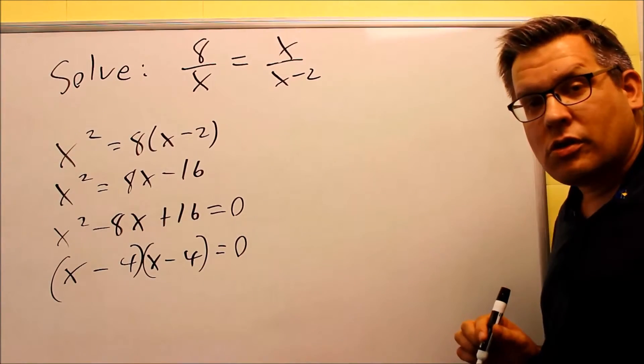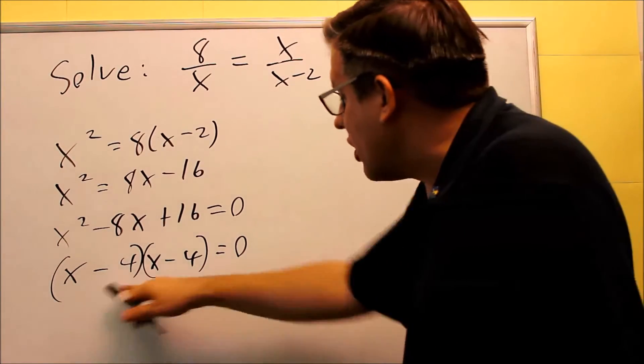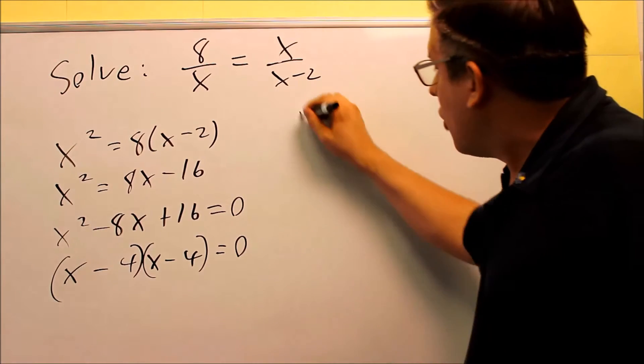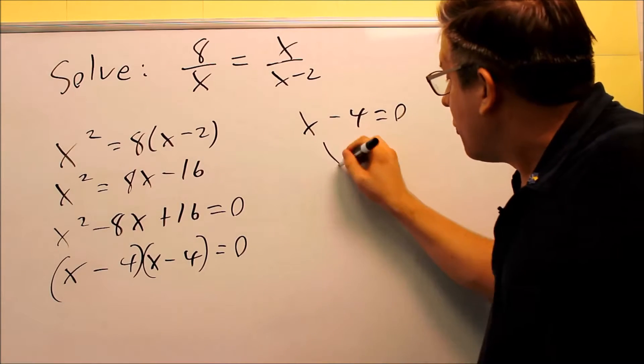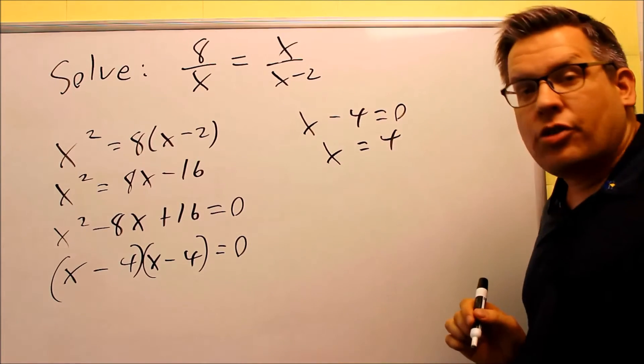So now we're just going to set that equal to 0. And normally you would set both of them, but since they're both the same, all we've got to do is just do one of them equal to 0. Add 4 to both sides, and you get 4.